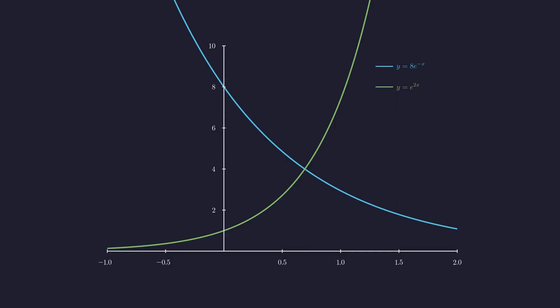Here's a question worth thinking about. What's the area of the region trapped between these two exponential curves? The blue one is y equals 8e to the negative x and the green one is y equals e to the 2x. This shaded region here bounded by the y-axis on the left, the blue curve on top, and the green curve below. The natural question is, how would you compute this area?